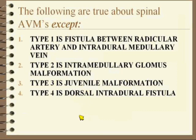So the following are going to be true about spinal AVMs, except — let's talk about classification. Type 1 is a fistula between radicular artery and intradural medullary vein. Type 2 is an intramedullary glomus malformation. Type 3 is the juvenile malformation. And type 4 is the dorsal intradural fistula. Which of those is not correct?